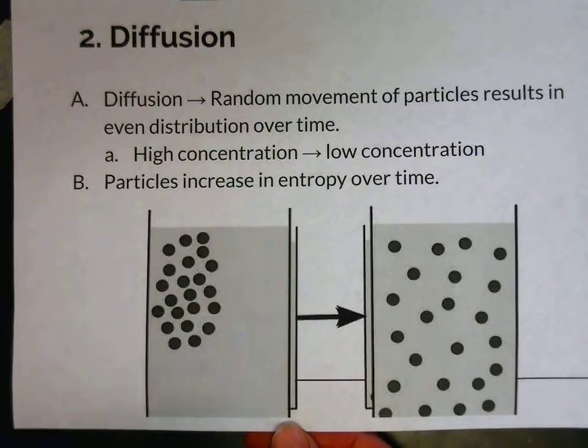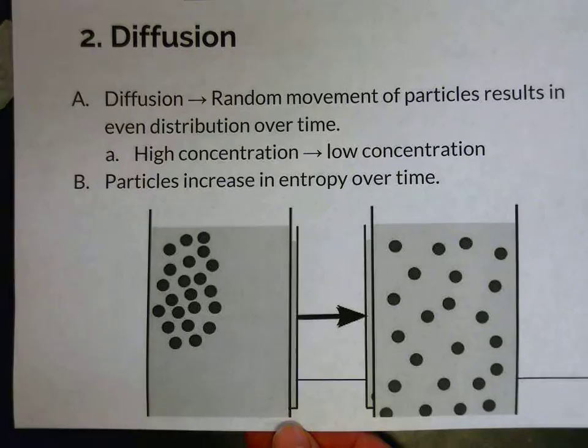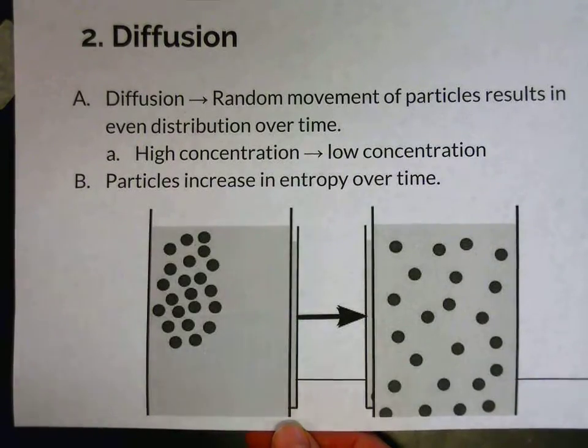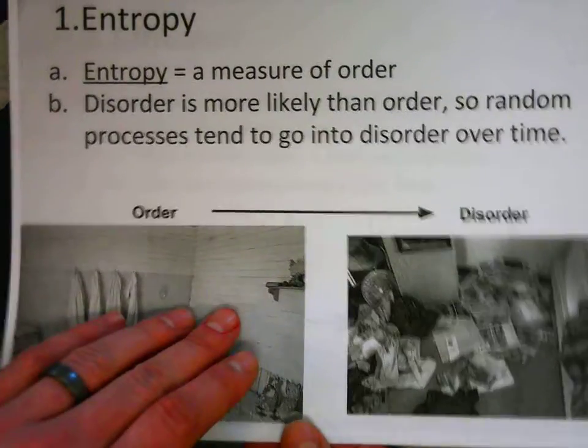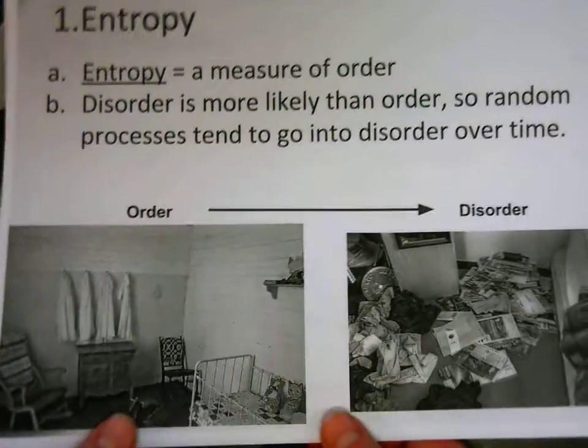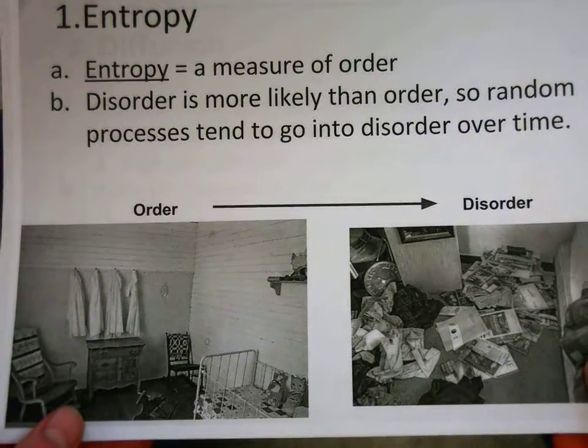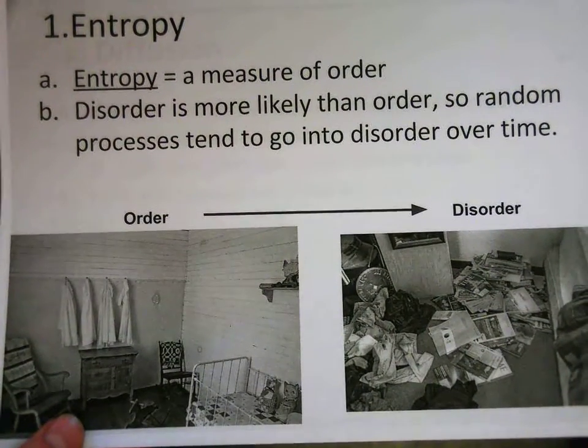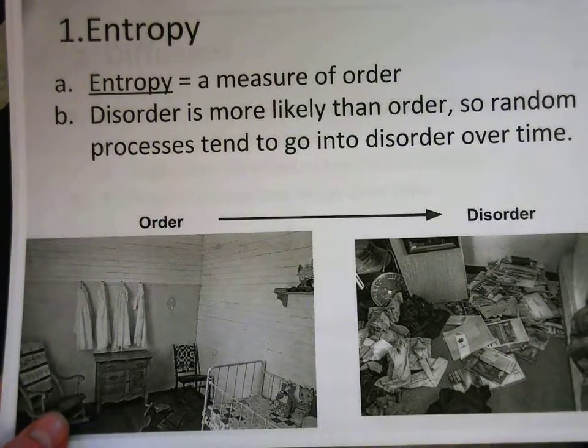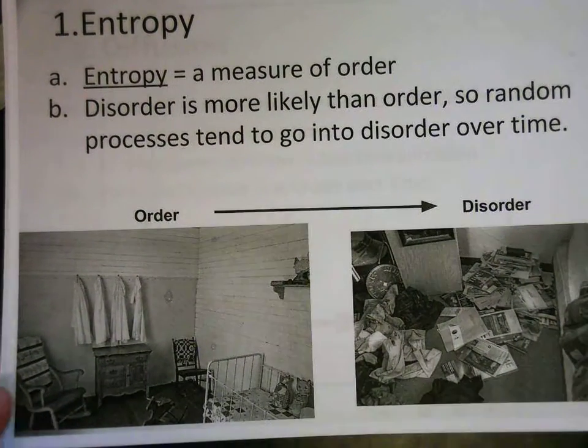And that's an illustration of the second law of thermodynamics. So entropy is just this idea that processes tend to go towards what is more probable. And it's one of the key driving forces behind chemical processes and reactions.